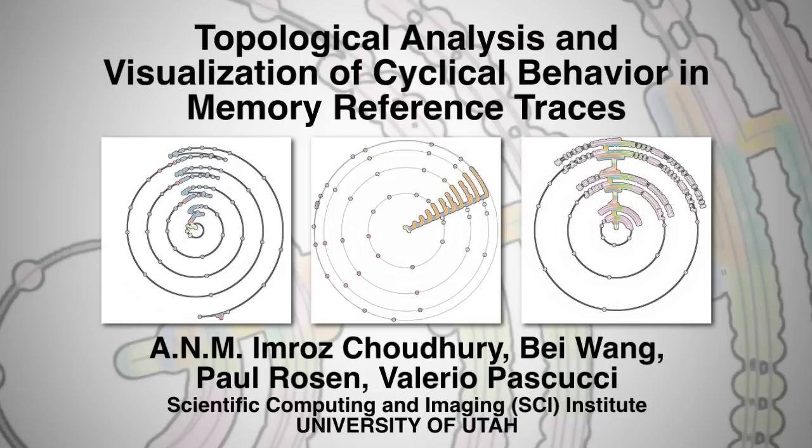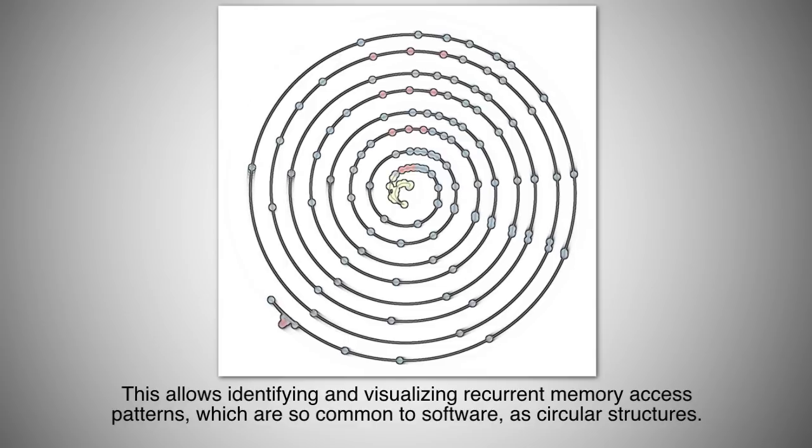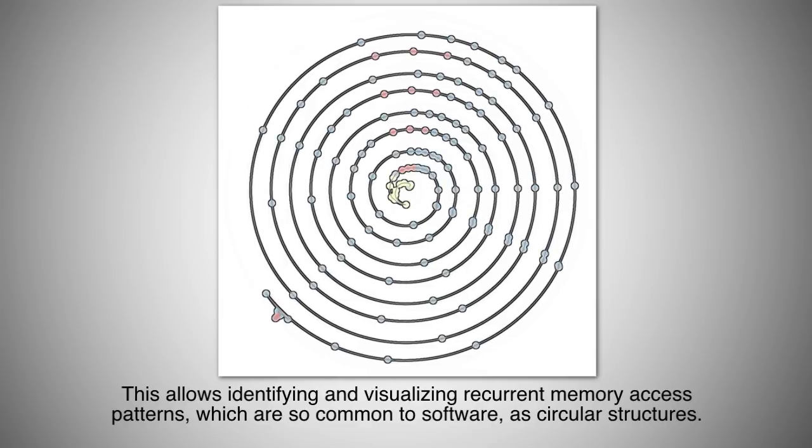Topological Analysis and Visualization of Cyclical Behavior in Memory Reference Traces. We present a method for performing topological analysis and visualization of memory reference traces. This allows identifying and visualizing recurrent memory access patterns which are so common to software as circular structures.